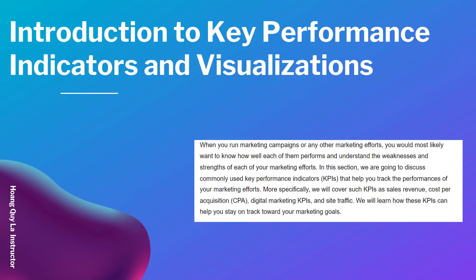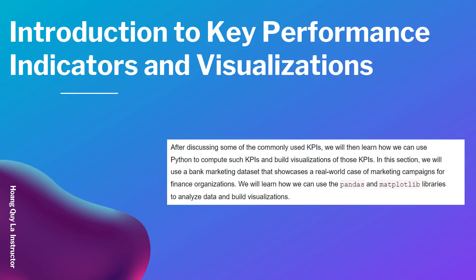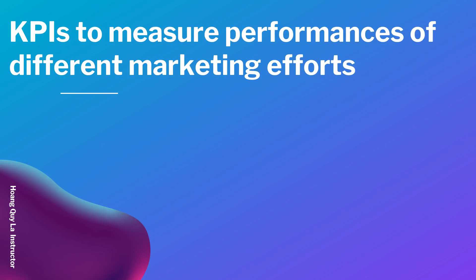We'll cover sales revenue, cost per acquisition (CPA), digital marketing KPIs, and site traffic. We'll learn how these KPIs can help you stay on track toward your marketing goals. After discussing some of the commonly used KPIs, we will then learn how we can use Python to compute KPIs and build visualizations. In this section we'll use a bank marketing dataset that showcases a real-world case of marketing campaigns for a finance organization. We'll use the pandas and matplotlib libraries to analyze the data and build visualizations.